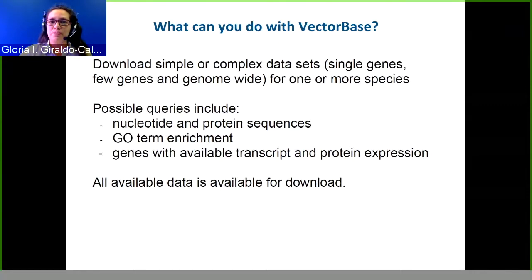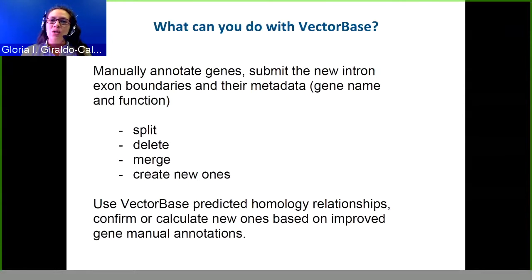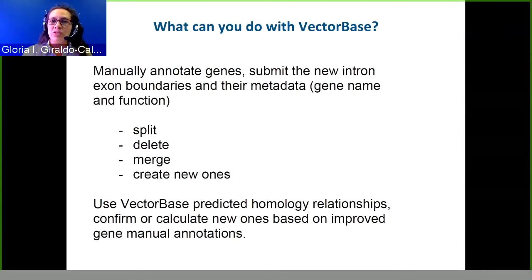Regarding manual gene annotation: VectorBase predicts about 20,000 genes per genome per species automatically, but there's a limit to what we can do automatically. We rely on scientists like you to manually correct each gene — you can split a gene, delete it, merge it, or specify exactly where it starts and ends. We have a tool called Apollo specifically designed for that purpose.